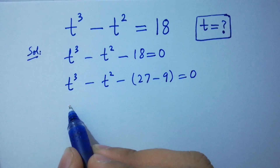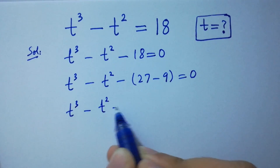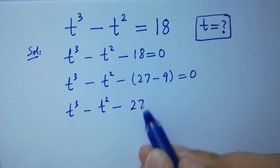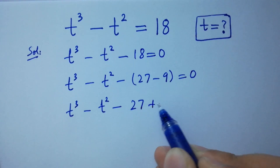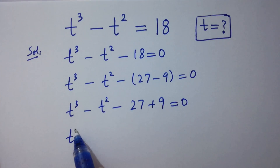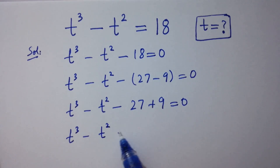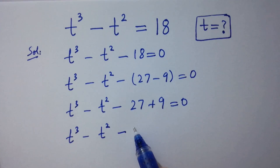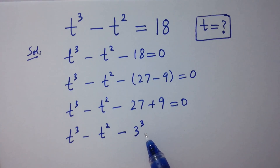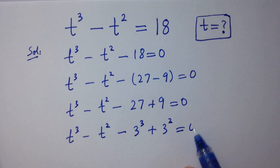So t cube minus t square minus 27 plus 9 equal to 0. Here 27 is 3 cube — 3 times 3 is 9, 9 times 3 is 27 — and 9 is 3 square — 3 times 3 is 9 — equal to 0.